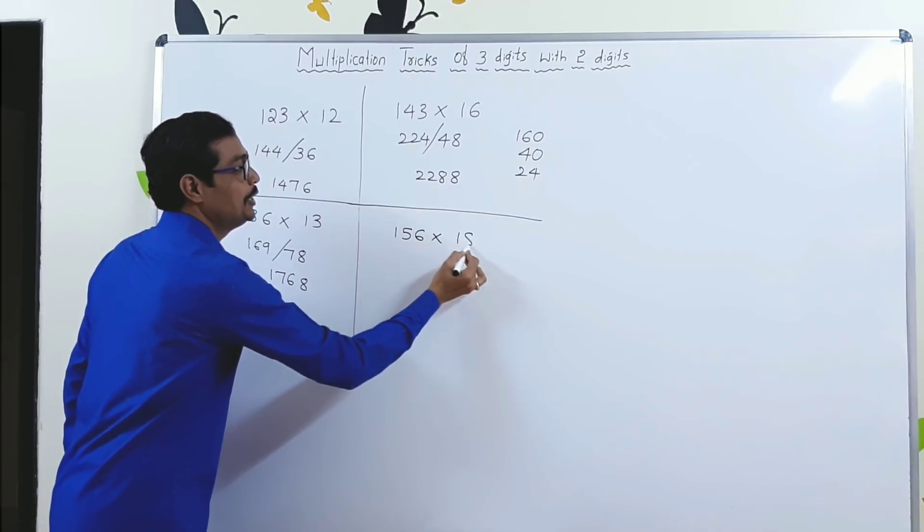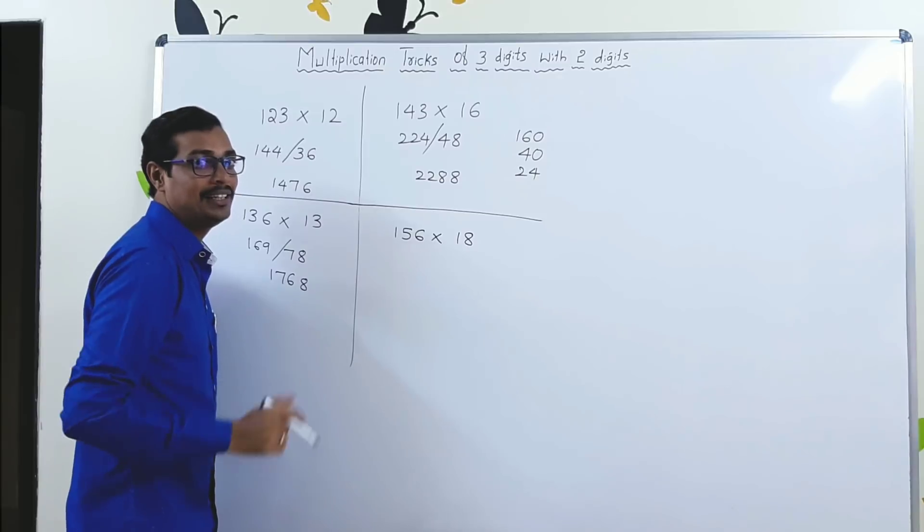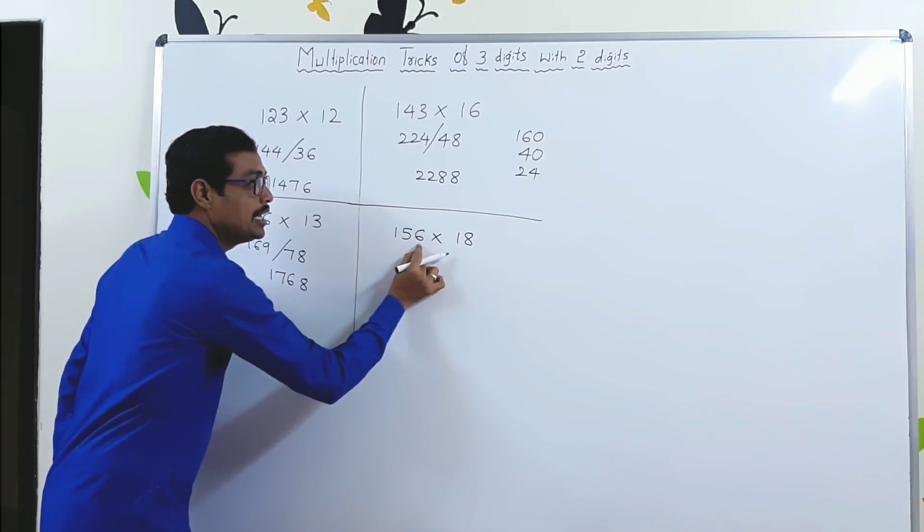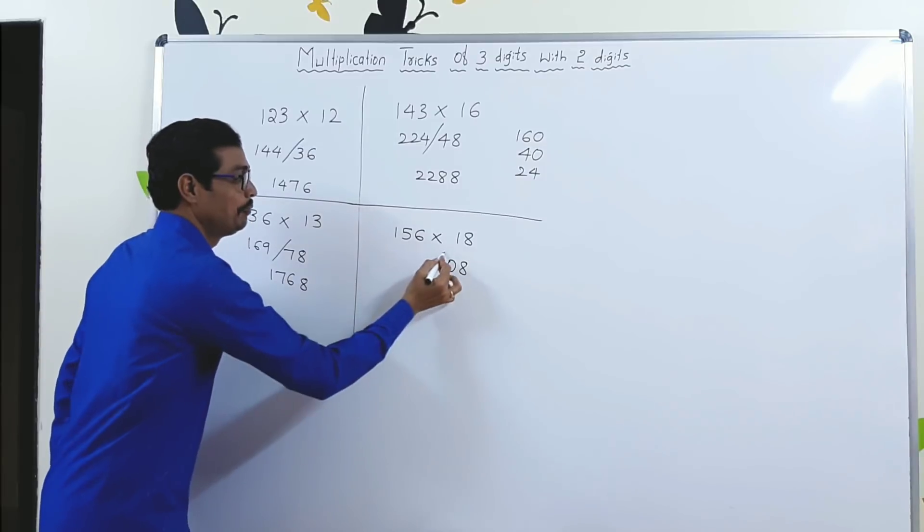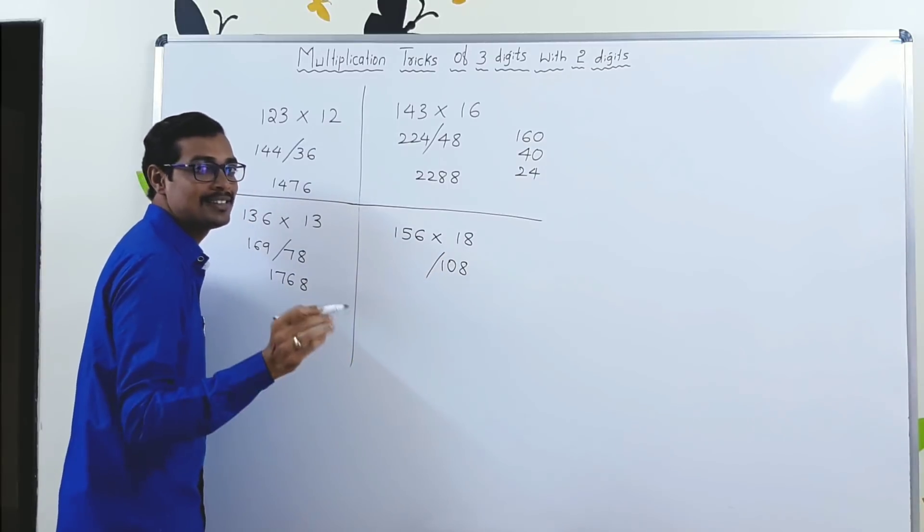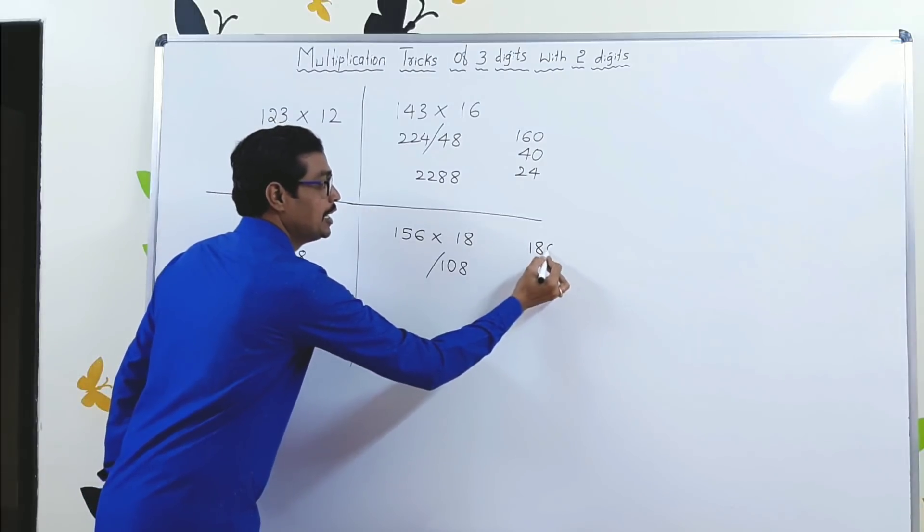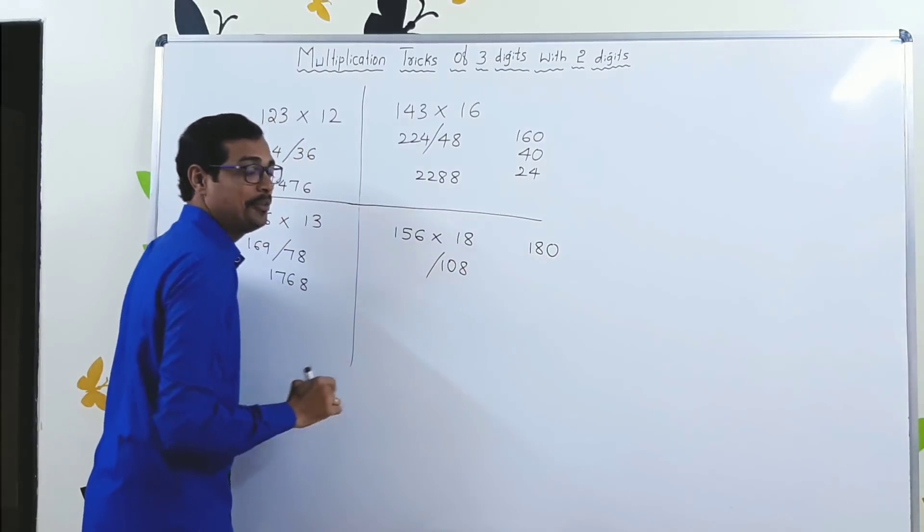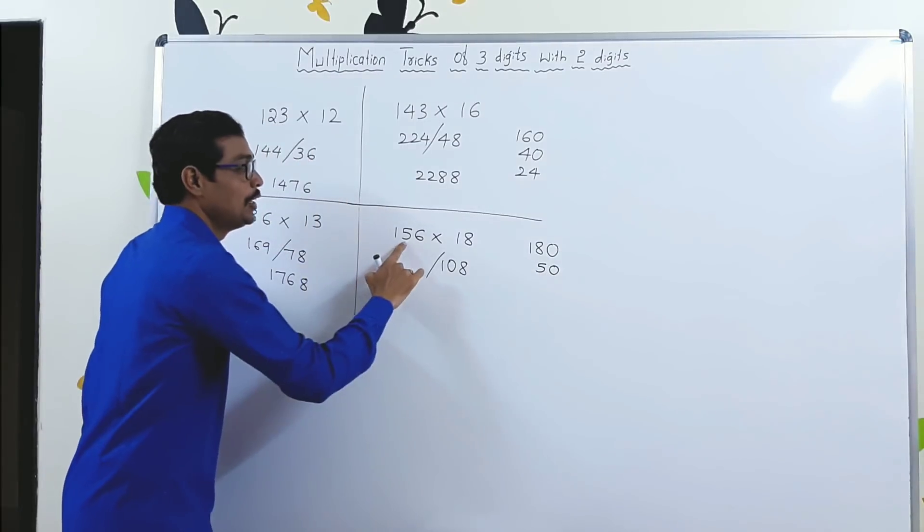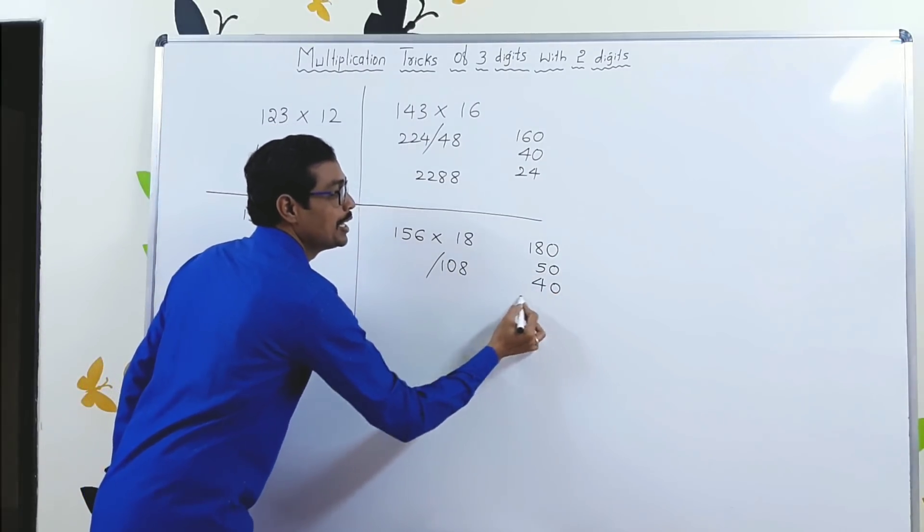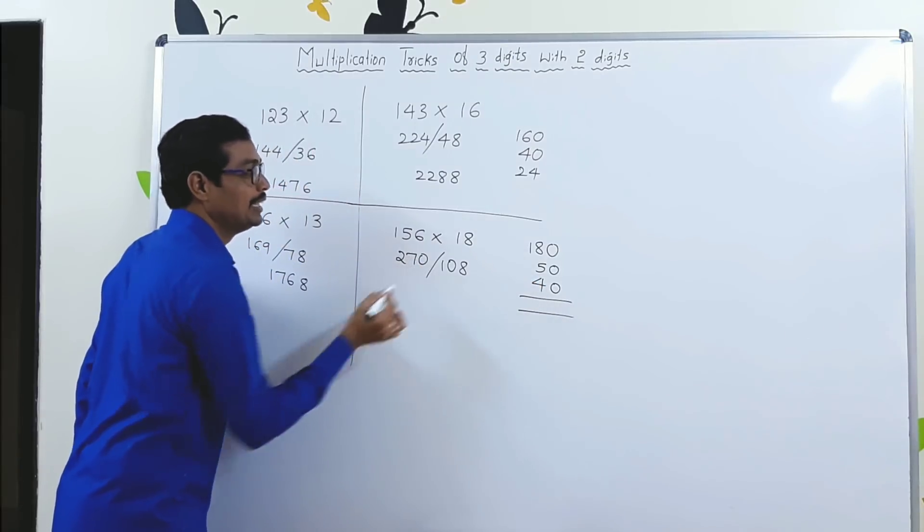156 into 18. Quite interesting. 18 × 6 is 108. 18 into 15. Simple. 18, write it as 180. 5, 50. 5 × 8 is 40. So, total, 270.